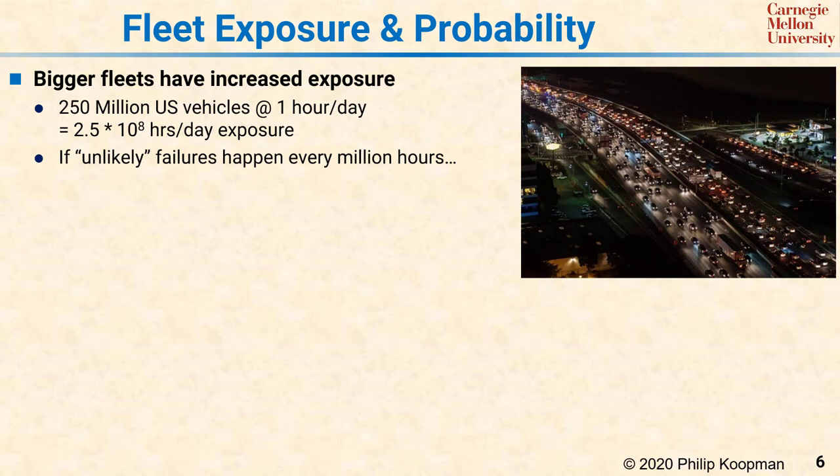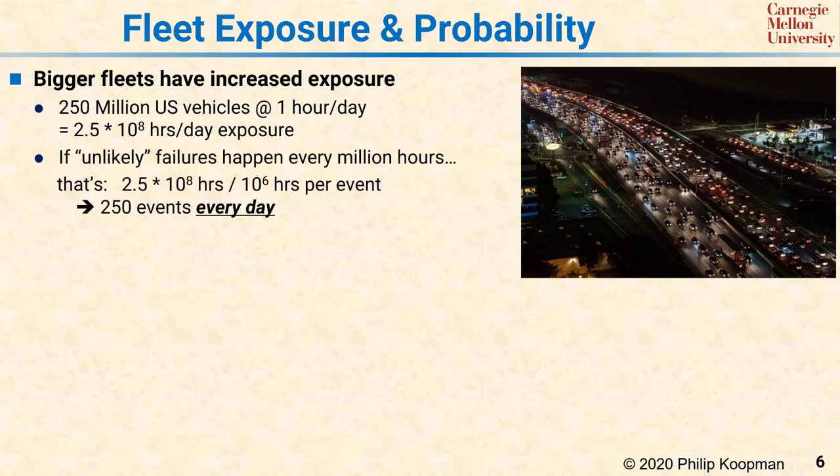However, if you're producing millions of products, it's not what happens to one product that matters, but what happens to the entire fleet of products that's exposed. For the fleet of U.S. vehicles, a failure that happens once every million hours of operation will, by simple math, be happening about 250 times every single day across the operational fleet. So what's unlikely for an individual can be near certainty for a fleet of deployed systems.